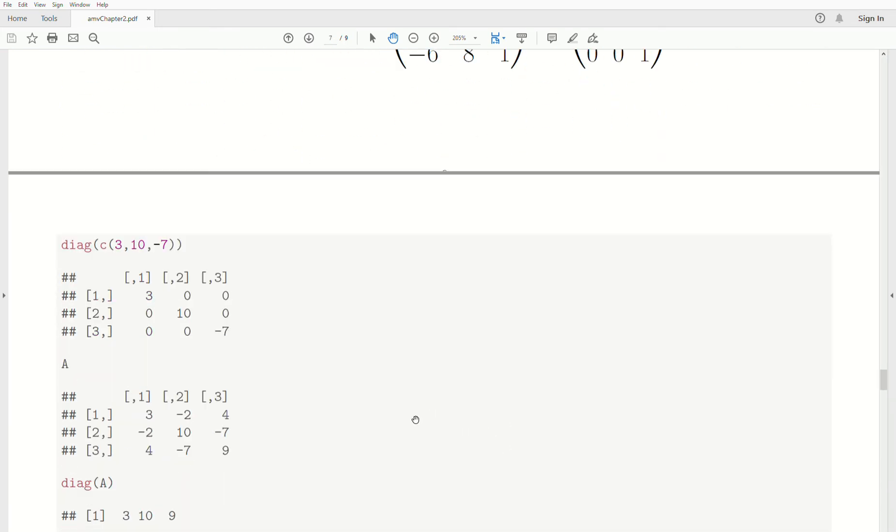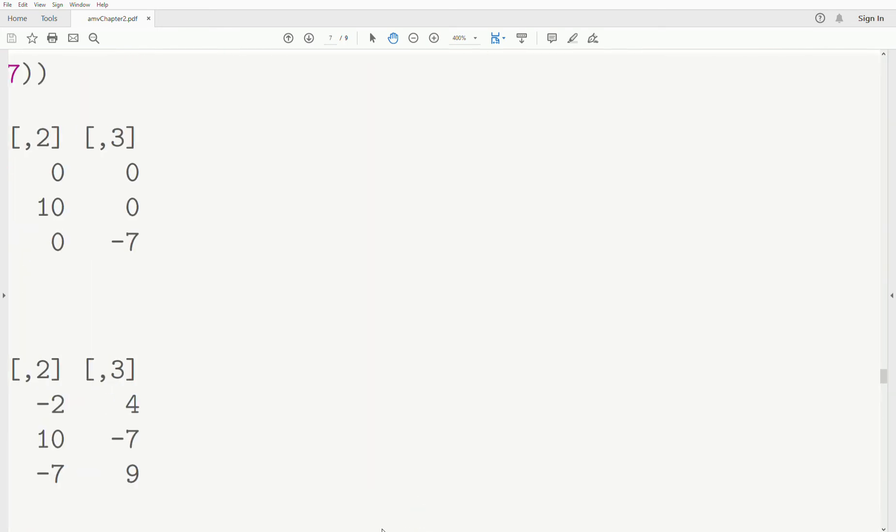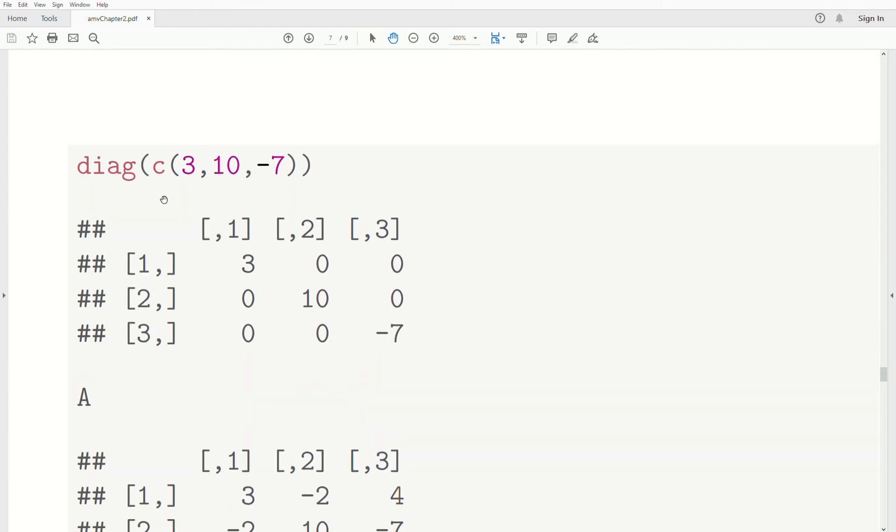Now, if we look at this in R, there's a diag function in R. So it takes a vector, remember C is the command in R that says, hey, what is in these parentheses is a vector. Now, it can be a character vector, a numeric vector, but it's a vector. Then take the diag of it, and it creates a matrix with those elements down the diagonal.